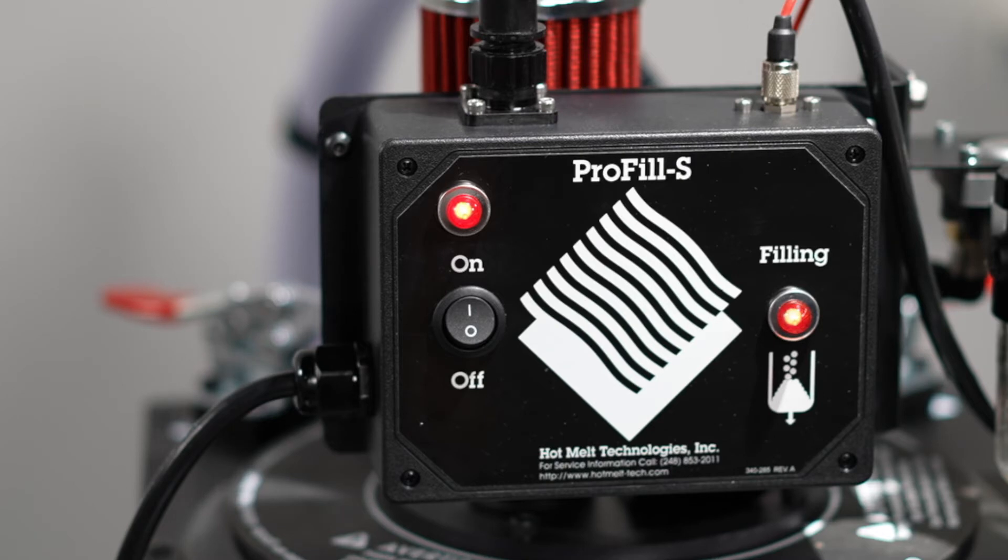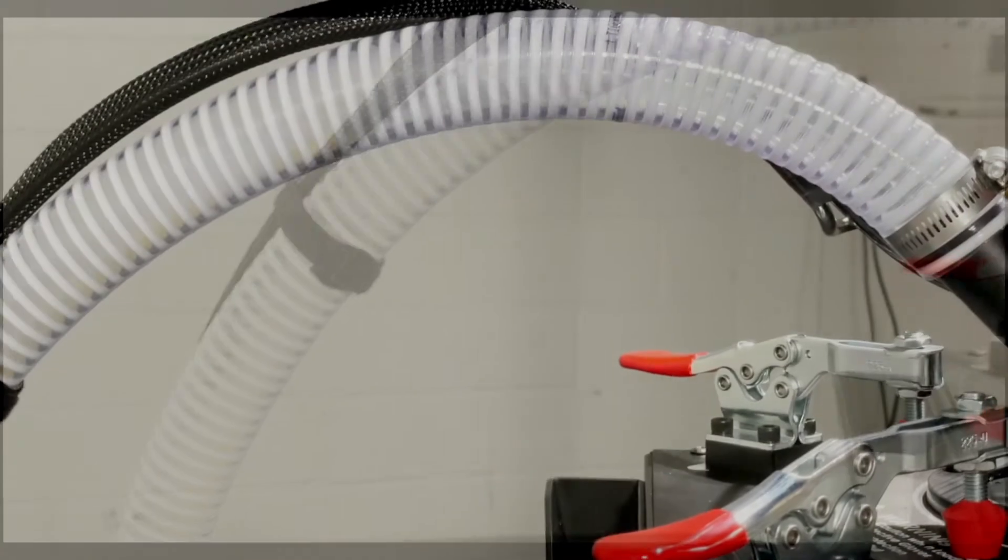When the sensor detects adhesive levels are dropping, it activates the vacuum. The melt tank is then topped off automatically.